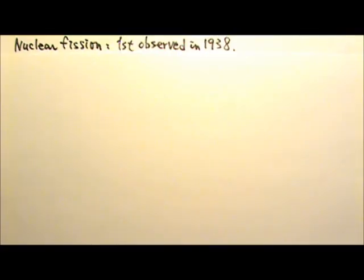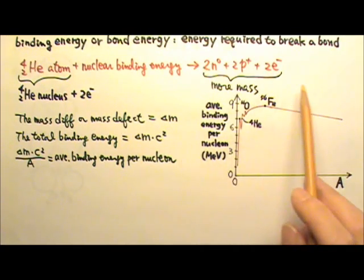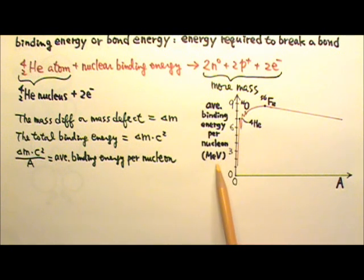Nuclear fission was first observed in 1938 by two German scientists. Remember that average binding energy per nucleon versus the number of nucleons graph?